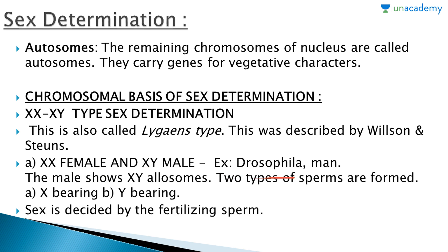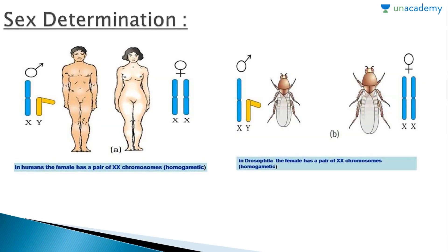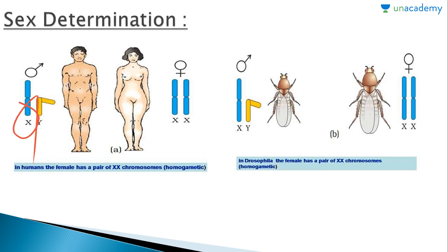In this type, XX is female and XY is male. Examples include Drosophila and humans. The male shows X and Y allosomes, and two types of sperms are formed: X-bearing and Y-bearing. The sex is decided by the fertilizing sperm.